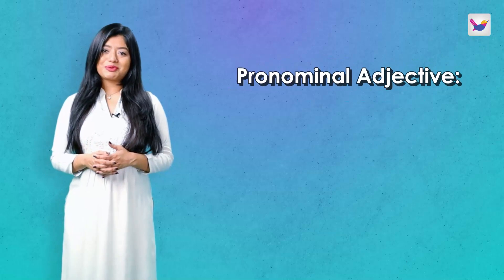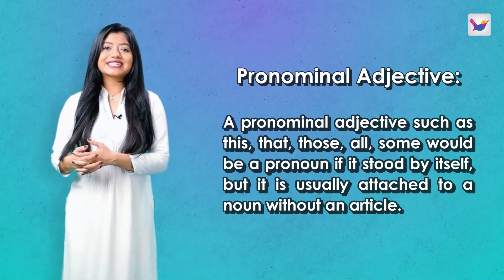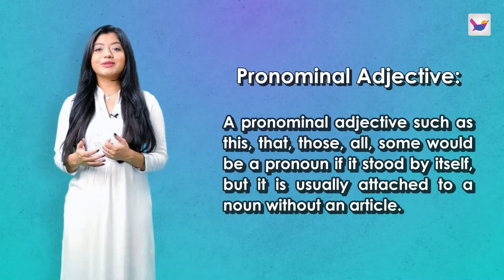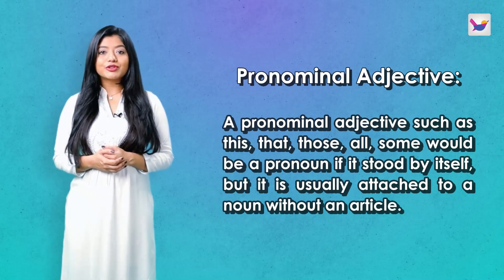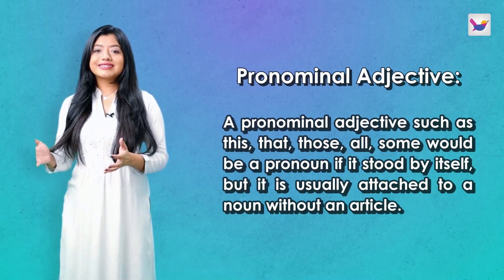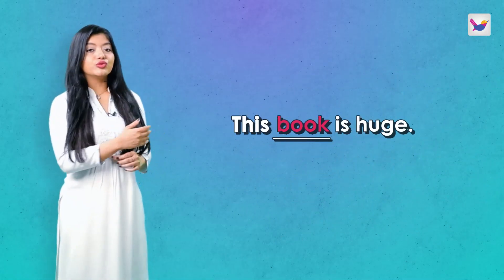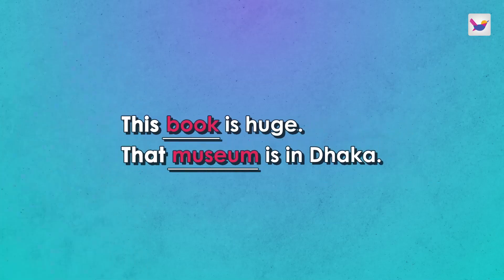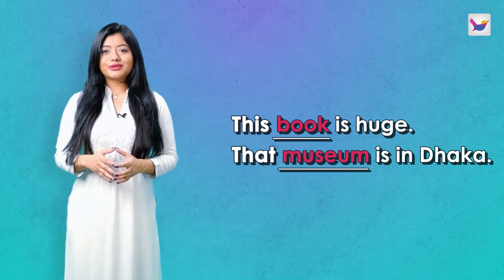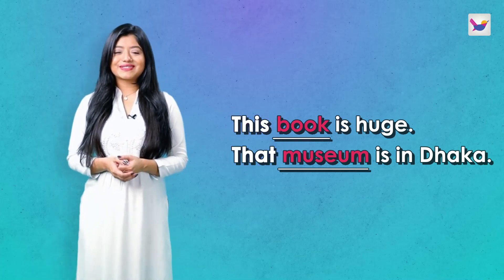Now let's learn about Pronominal Adjective. When a pronoun sits before a noun and does the work of an adjective, we call it a Pronominal Adjective. For example: this, that, those, all, some, etc. In sentences: This book is huge. That museum is in Dhaka. Here the underlined words are nouns and the bold words are Pronominal Adjectives.